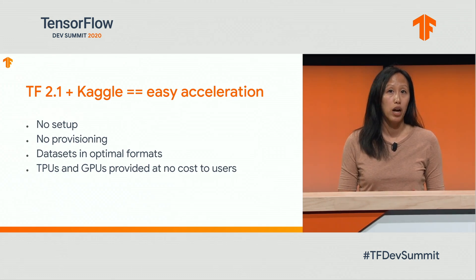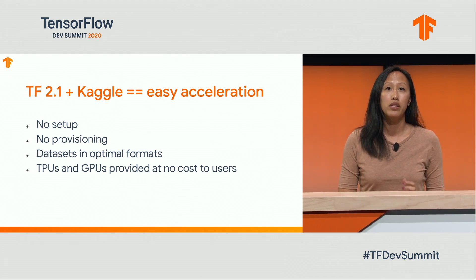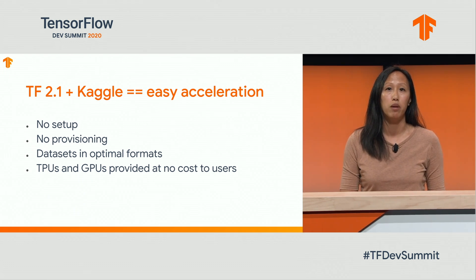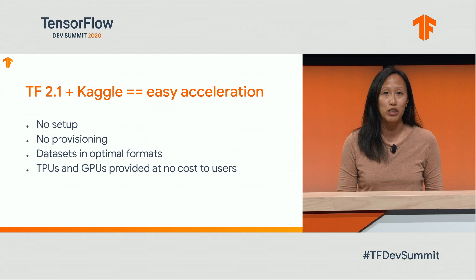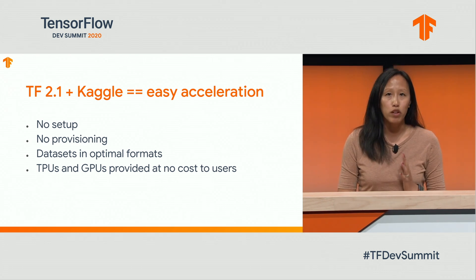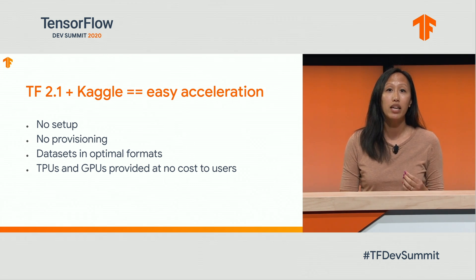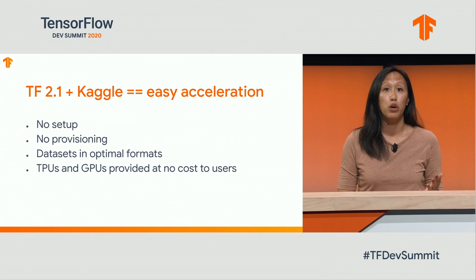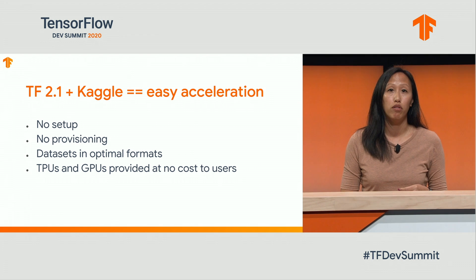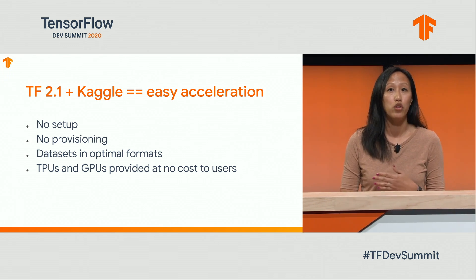If you'd like to check out TensorFlow 2.1, especially with a GPU or TPU, Kaggle makes it super easy. You can see from the list on this slide that we've eliminated a lot of the obstacles to making TensorFlow 2.1 build your models fast and with next to no specialized code — no provisioning the right kind of VM, no setup, data sets that are ready to go, and a weekly amount of TPU and GPU time allotted to users for no cost. We'll look at some code that'll build a model on Kaggle for a competition to classify flowers on CPU, GPU, and TPU with no changes.